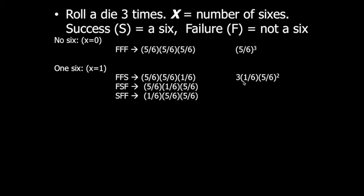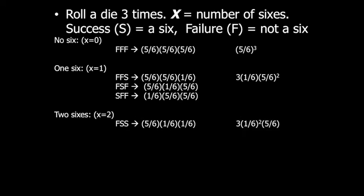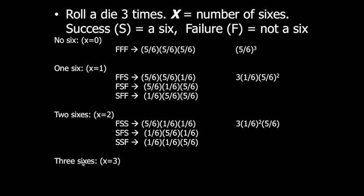For two successes, we can have FSS, SFS, or SSF, giving 3 × (1/6)² × (5/6). For three sixes — SSS — the probability is (1/6)³. We can summarize these using a binomial probability distribution table: x = 0, 1, 2, 3 with corresponding probabilities.